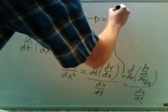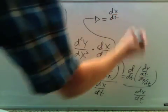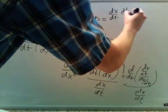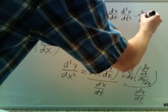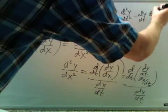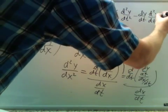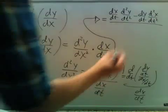So I have the bottom times the derivative of the top, minus top times the derivative of the bottom, all over the bottom squared.